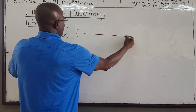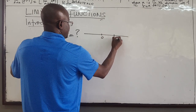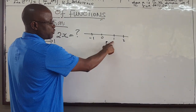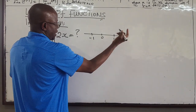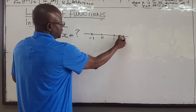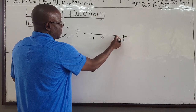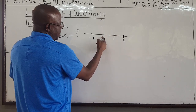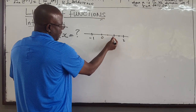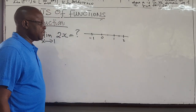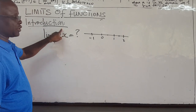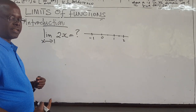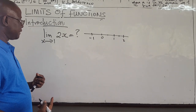So if this is our number line, 0 is here, this is 1, you have 2, you have negative 1 and so on. We are going to approach 1. We can start from 2, then 1.5, and get closer and closer to 1 from the right hand side. Or we can start from 0, then 0.5, and get closer and closer to 1 from the left hand side, and see the number that this function approaches. If they are both approaching the same number, then that number is the limit.